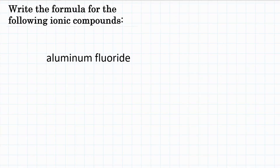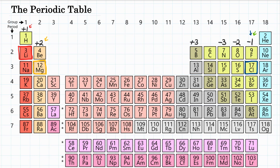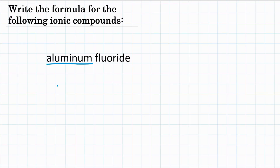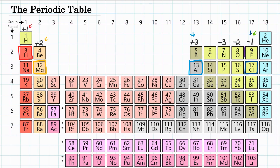Next example: aluminum fluoride. Aluminum, symbol Al, is in group 13 and will become positive three. Fluoride is just fluorine — looking at the periodic table, fluorine is in the same column as chlorine, so they form the same charge: both negative one.